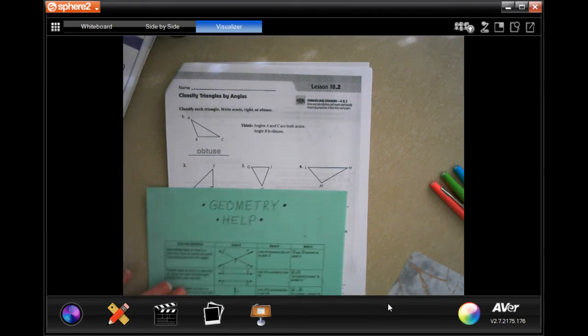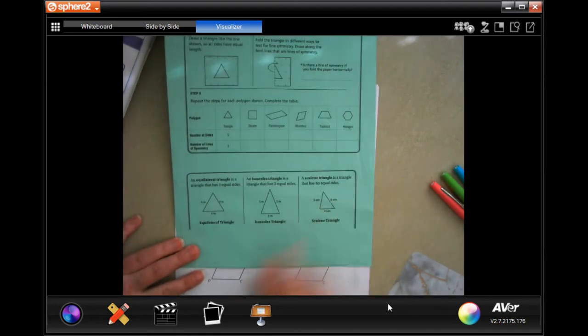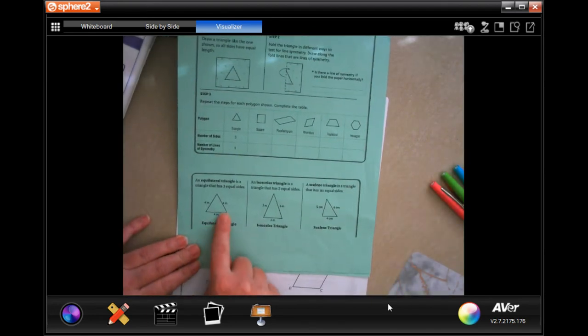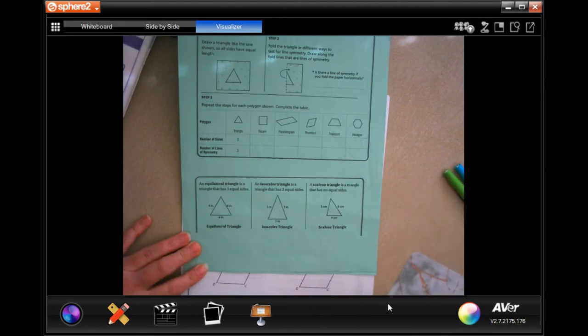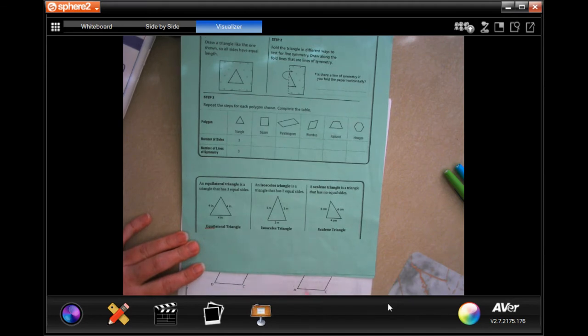The other thing that you need to remember is different triangles. Triangles that have equal on all sides are equilateral - equal size, equilateral. Isosceles is like ice cream cone.